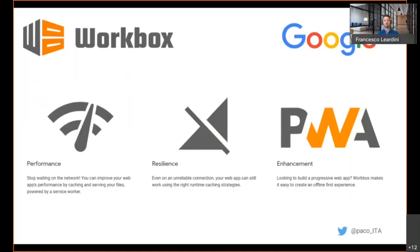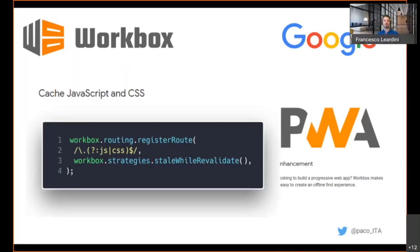One of these libraries is called Workbox — it's an open-source project from Google. It consists of a set of libraries and Node modules that make it easy to cache assets and implement caching strategies — not only the ones we saw but even more. It works by registering routes: we can register routes by defining strings targeting specific file paths or regular expressions — for example, to cache JavaScript and CSS files. The good news is that we can invoke one method — in this case, staleWhileRevalidate — and that's it. This is all we need to implement all the code we saw before, and the implementation of these strategies is very well optimized.